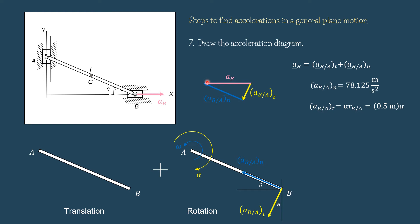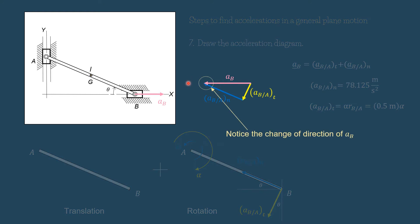This triangle follows the relation: AB equals ABAT plus ABAN. Now the direction of AB has changed — it is not going to the right but going to the left. This means our initial assumption was not correct.